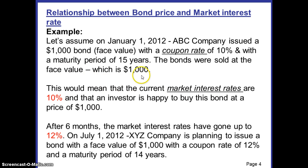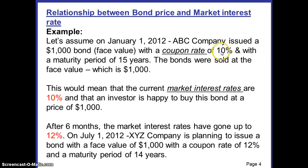The bond had a coupon rate of 10% and a maturity period of 15 years. The bonds were sold at the face value of $1,000, meaning the bond's market price was also $1,000. The current market interest rate was 10%, which is the same as the coupon rate of 10%. The investor was happy to buy this bond at $1,000 because the market interest rate equaled the coupon rate.